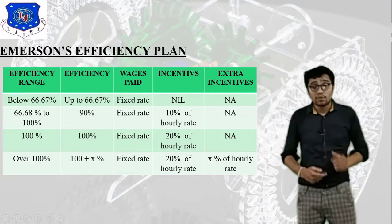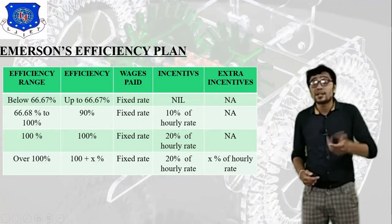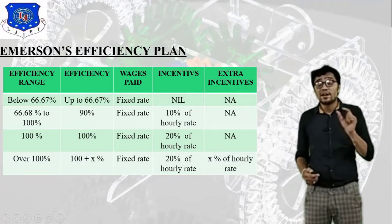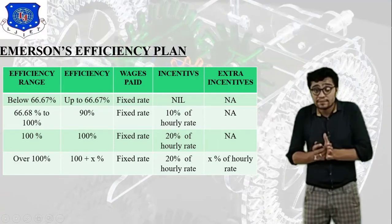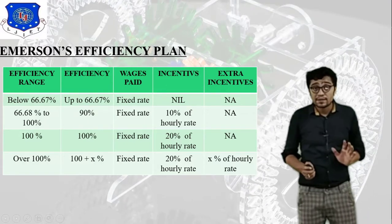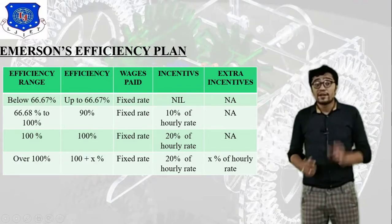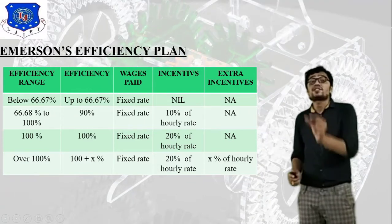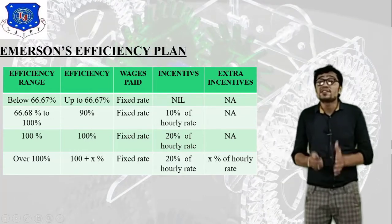Level four covers over 100% efficiency — for example, 105%, 120%, or 130%, expressed as (100 + X)%. At this level, the worker receives the fixed rate plus 20% of the hourly rate, and additionally extra incentives are also given. So at level four, the total compensation includes wages paid, plus incentives, plus extra incentives. This is Emerson's efficiency plan.